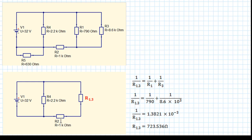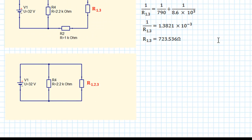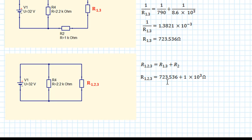Now we've done that we can look at our circuit and see what we can simplify next. These two resistors are in series, so let's replace both of those with one effective resistor R123. R123 equals R13 plus R2. We know both values, so substituting those into the formula and simplifying, R123 is equal to 1723.536 ohms.